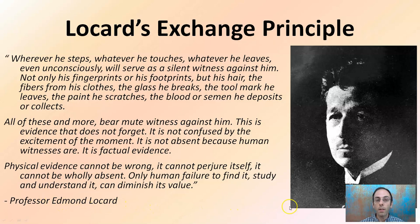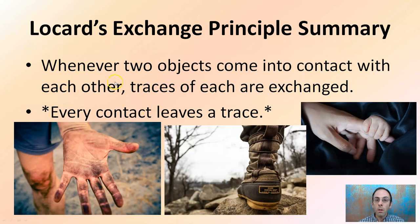This is that key principle — forensic scientists are always looking for that physical evidence because it is unprejudiced. It is there; we just need to find it, and it could be in a variety of forms. The general summary is: whenever two objects come in contact with each other, traces of each are exchanged.